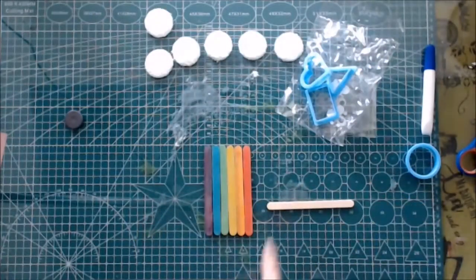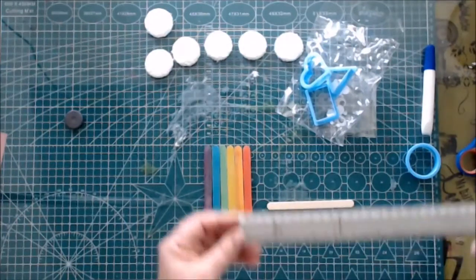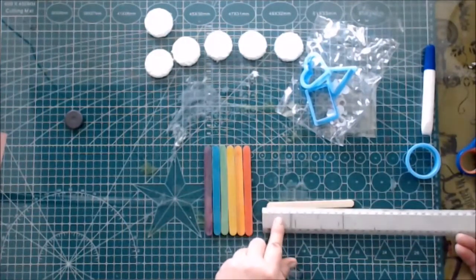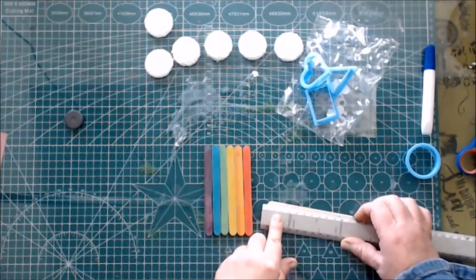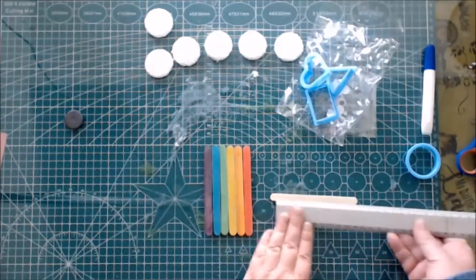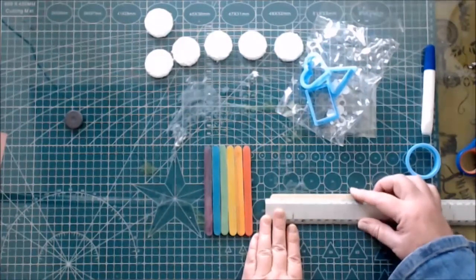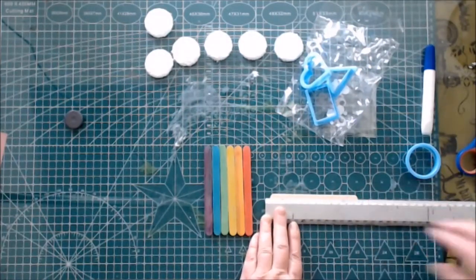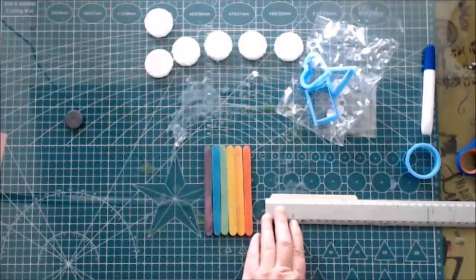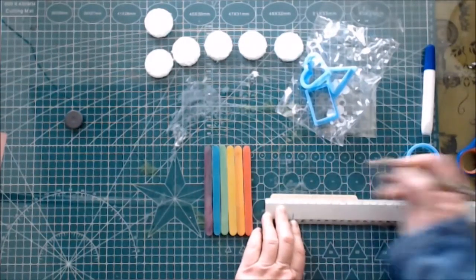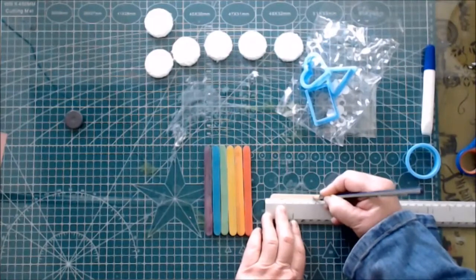To keep these popsicle sticks together, we are going to use the neutral one and glue it to the back. I am taking a ruler to get exactly the middle of this popsicle stick because I am going to use scissors to cut it. If you are still too small, please ask mommy or daddy to cut the popsicle stick for you.